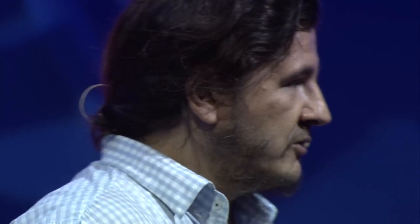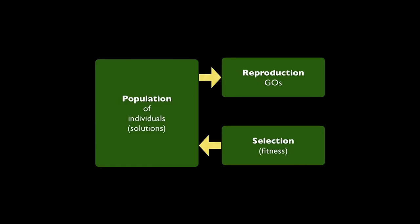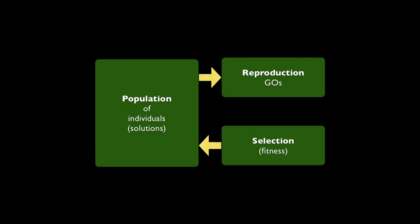What we did was use evolutionary computation in a different way than it's normally used. In evolutionary computation, you have a population of individuals and each individual is a possible solution. You have a reproduction that works on the population, creating new solutions out of the solutions that are already there.